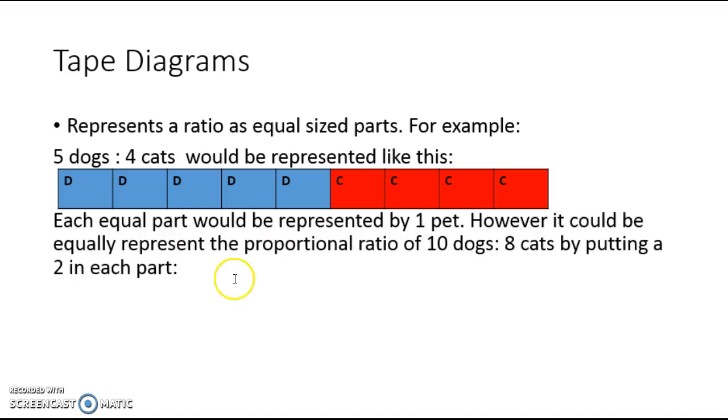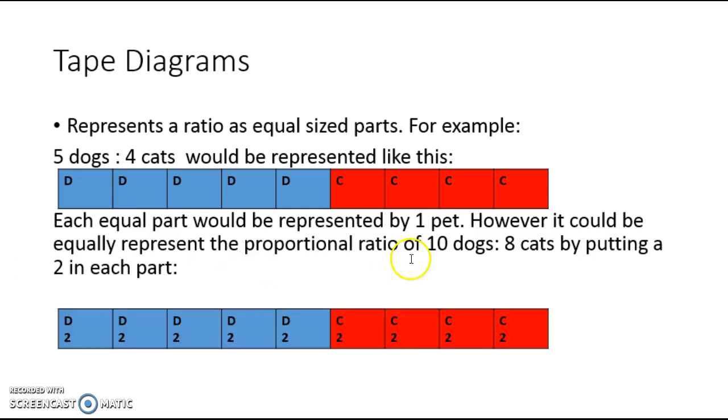Now, I can use the same tape diagram to represent any proportional relationship to five to four. For instance, if I multiply five dogs times two, I get ten dogs. And if I multiply four cats times two, I get eight cats. So I can actually represent this same ratio using the same diagram. I can represent this ratio down here, which is proportional to our five to four. So I'm using the same tape diagram to represent a proportional relationship.